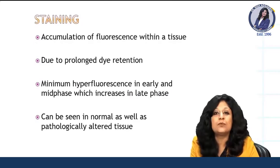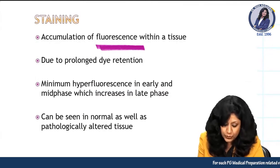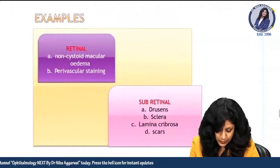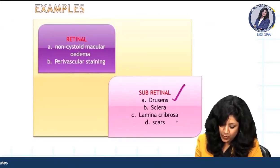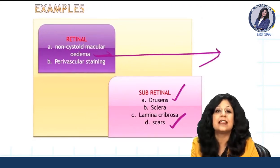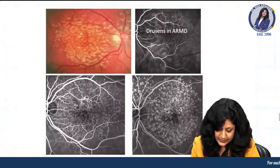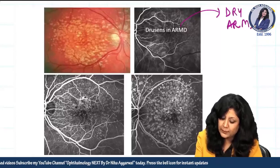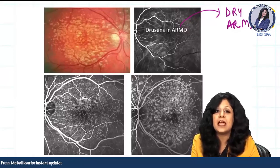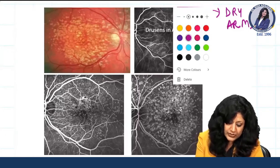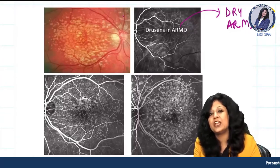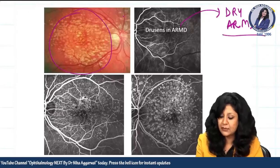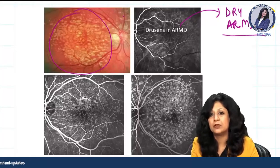Staining — more fluorescence due to prolonged dye retention — occurs in altered tissue. For example, in drusens, scarring, or edematous areas there is pooling of fluid. Drusens are very typical of dry ARMD: extracellular deposits between the RPE and Bruch's membrane of the choroid. On angiography you see numerous hyperfluorescent areas. To differentiate drusens from microaneurysms: their number is very high at the macula and they uniformly affect the macular area, which is typical of drusens in ARMD macular degeneration.